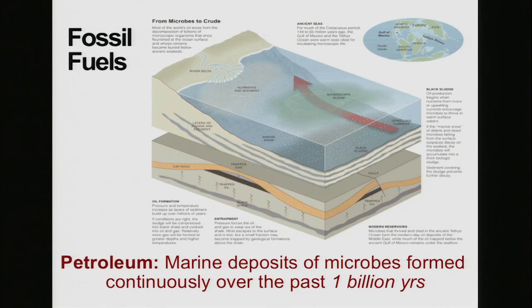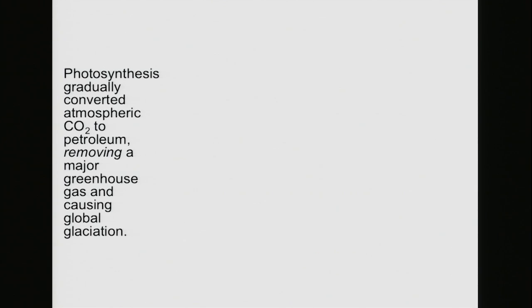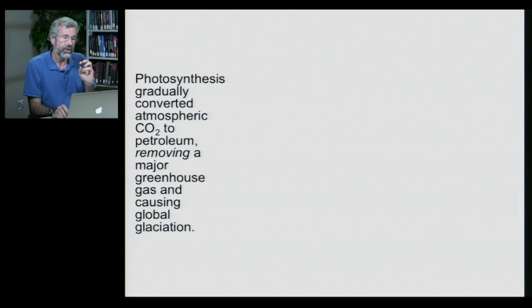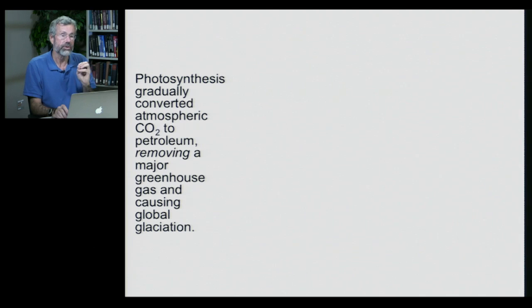But as this built up, it led to a great loss in CO2. A blanket was now missing from the Earth's surface — heat could radiate out and the Earth got very, very cold. So as photosynthesis gradually converted atmospheric carbon dioxide to petroleum, removing a major greenhouse gas, there was widespread glaciation.